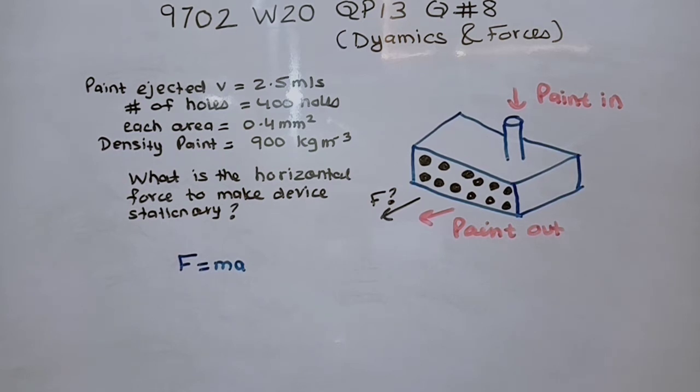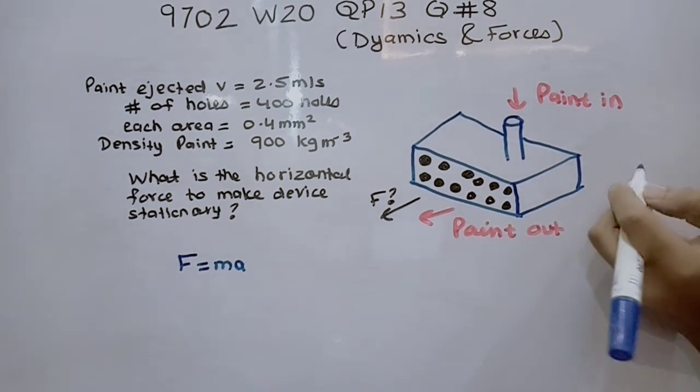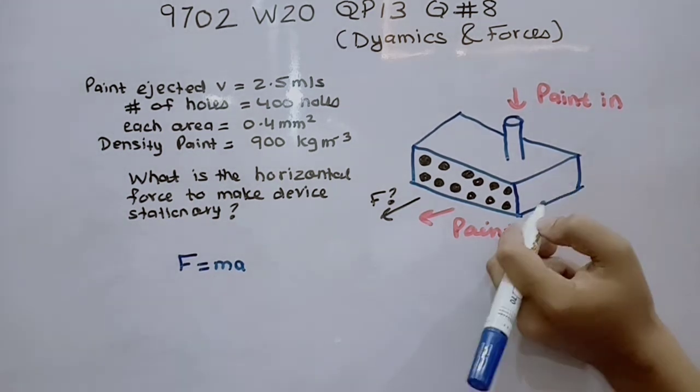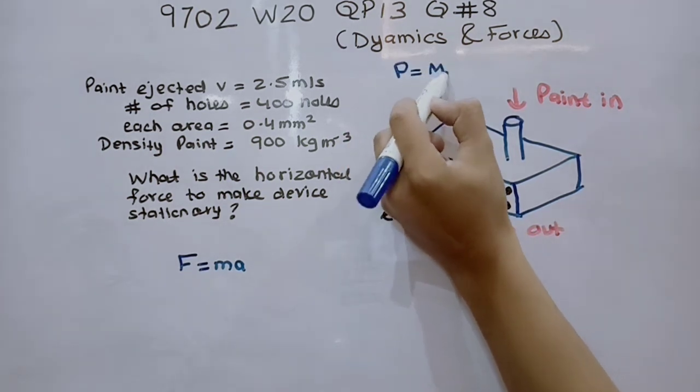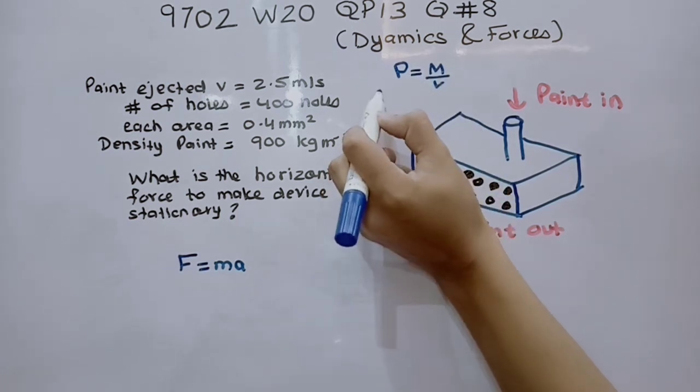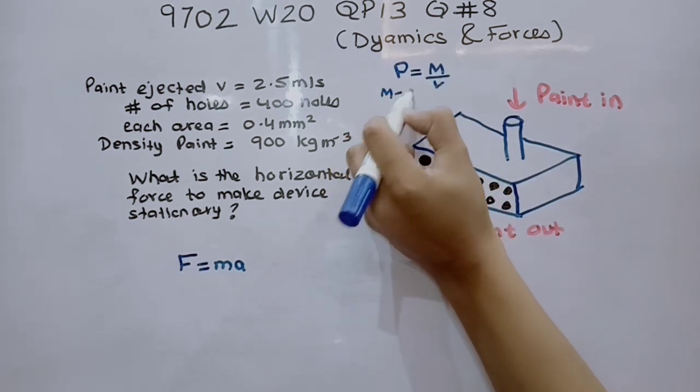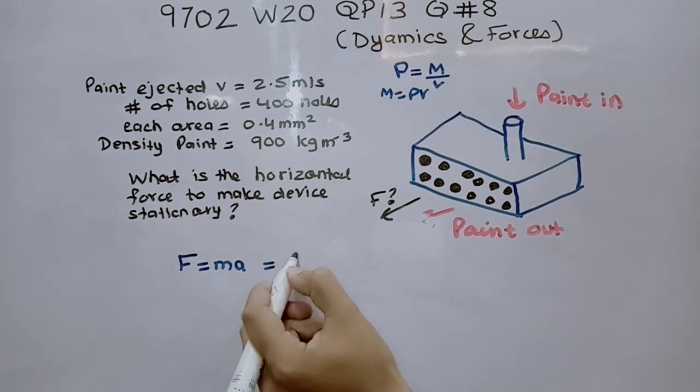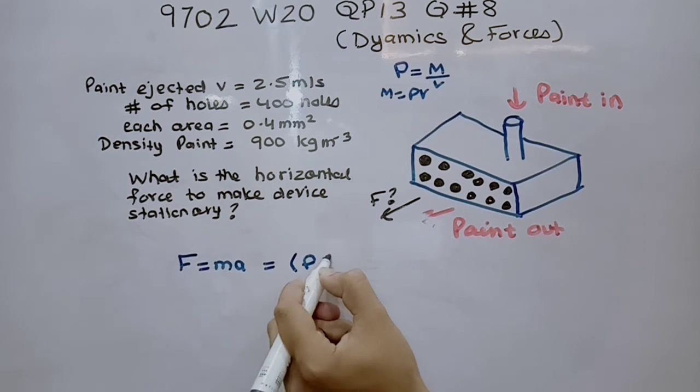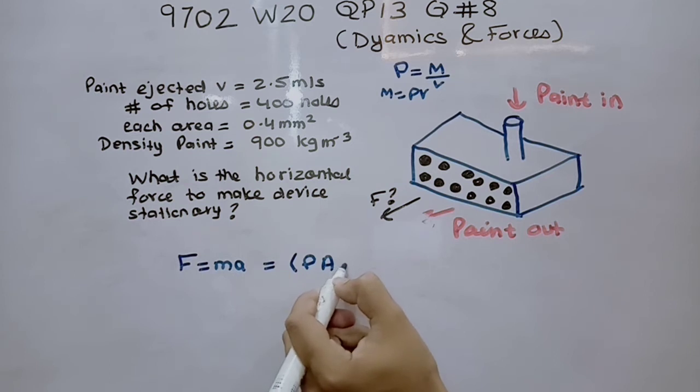Let's see what we can do. Now first considering mass. We know that density can be written as mass over volume. And mass could be written as density into volume. So what I could do over here is that write F equals MA, M as density into volume. Now volume could also be written as area into X, X is the distance. Let's write it as D, distance.